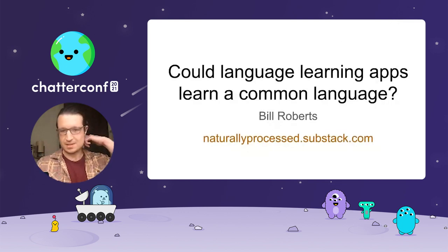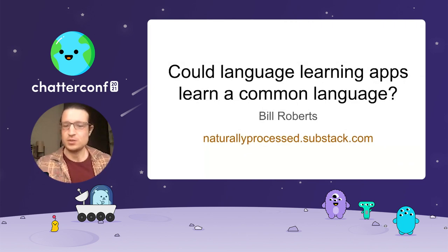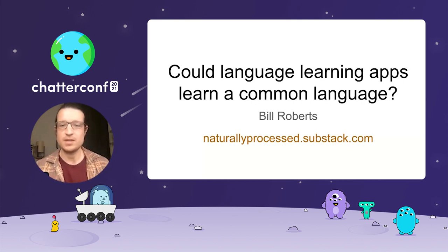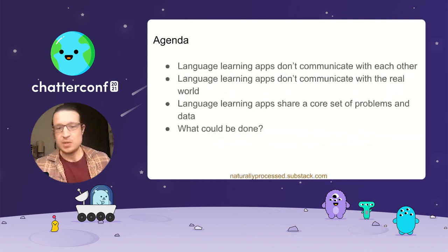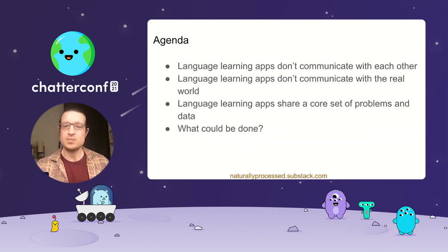My name is Bill Roberts, and I actually don't have a product to pitch. I write at a Substack called Naturally Processed — you can find it at naturallyprocessed.substack.com — where I write about ideas and the language learning ecosystem and future directions. Here's an idea I've been thinking about as I've surveyed the landscape: language learning apps don't actually speak a common language. Today I'm going to make three broad statements — three generalizations — that I think are generally correct. The first is that language learning apps don't really communicate with each other. Each app is its own little walled garden, and what happens in one app is not shared with other apps in a way that's useful for the learner.